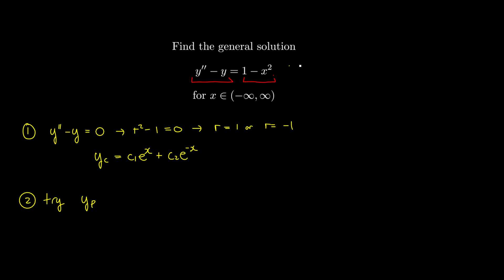Let's compute the derivatives of 1 - x². The zeroth derivative is 1 - x², the first is -2x, the second is -2, and then 0. Looking at what distinct functions appear: a constant, a linear x term, and an x² term. So we try yp = a + bx + cx², as any linear combination of the function and its derivatives will be of this form.